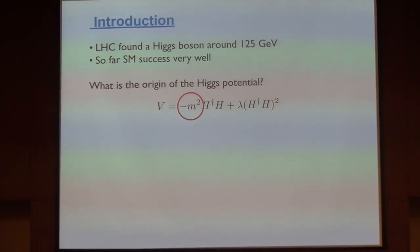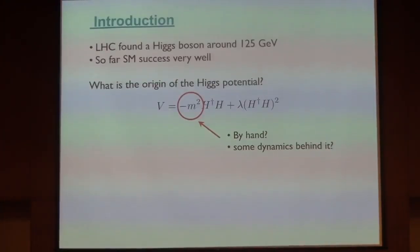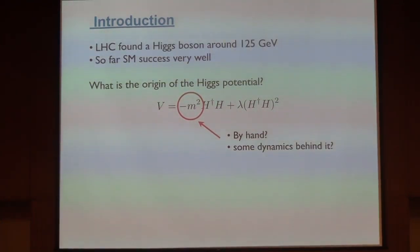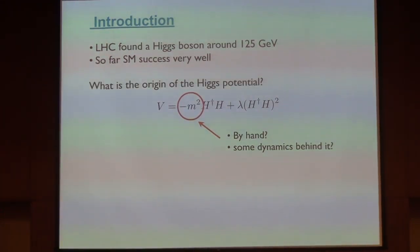This is a very mysterious part in the standard model. The question is: who determines this mass parameter? Or in other words, how is the scale of the Higgs potential determined? By hand? Or are there any dynamics behind the Higgs potential? We don't know the answer. But let's consider the latter possibility.